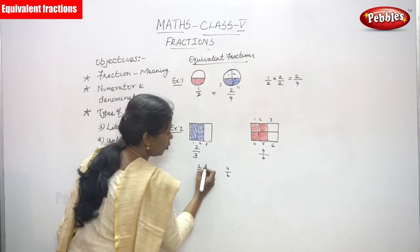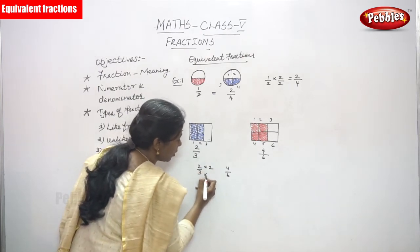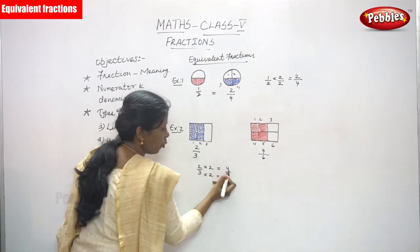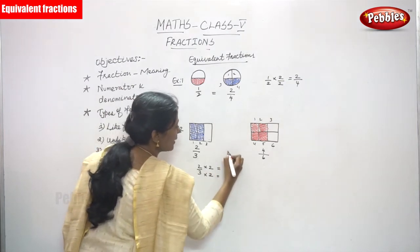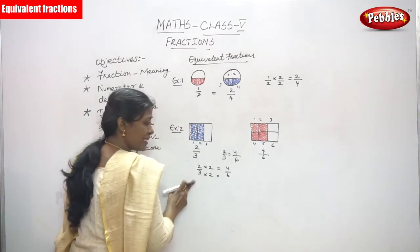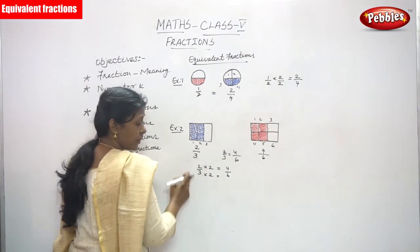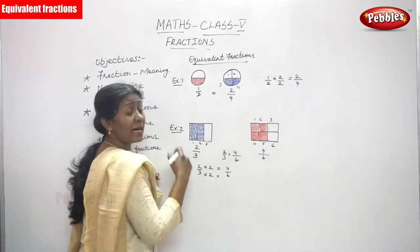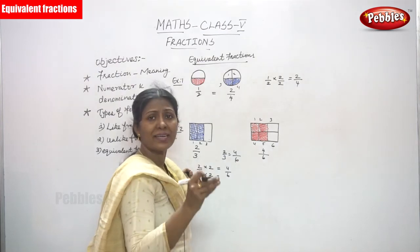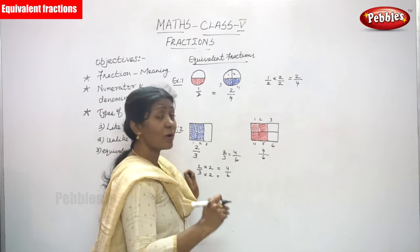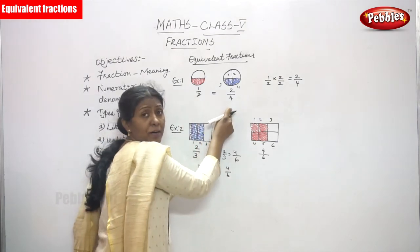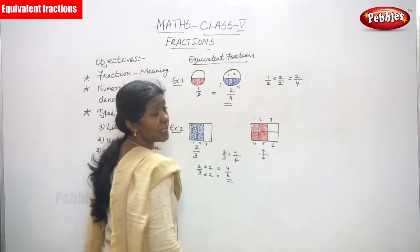So how does 2 by 3 become an equivalent fraction? I multiply by 2 — the numerator 2 multiplied by 2 gives 4, and the denominator 3 multiplied by 2 gives 6, so the answer is 4 by 6. So 2 by 3 is equal to 4 by 6. This is an equivalent fraction. Equivalent fractions are found by multiplying or dividing the numerator and denominator by the same number. In this diagram, 2 by 3 equals 4 by 6, and in the circle diagram, 1 by 2 equals 2 by 4.